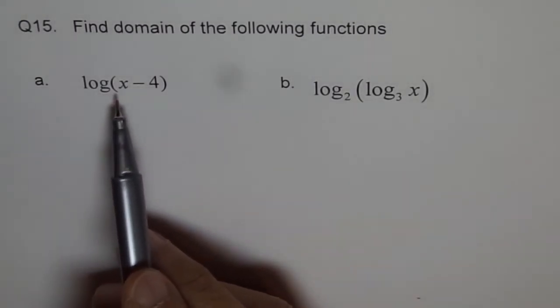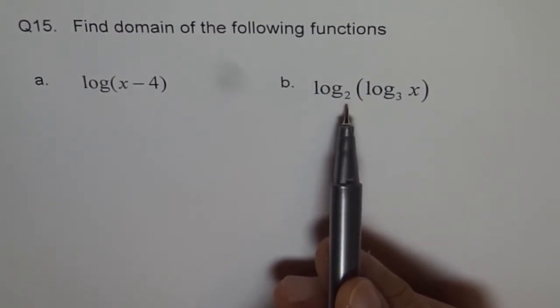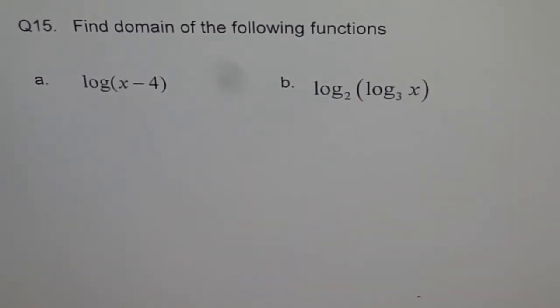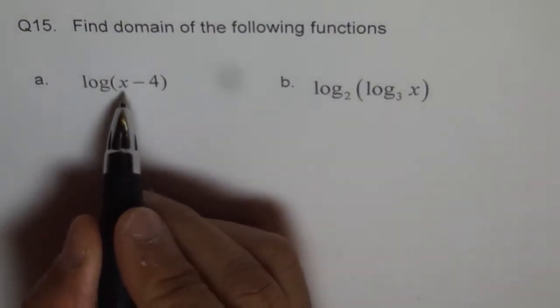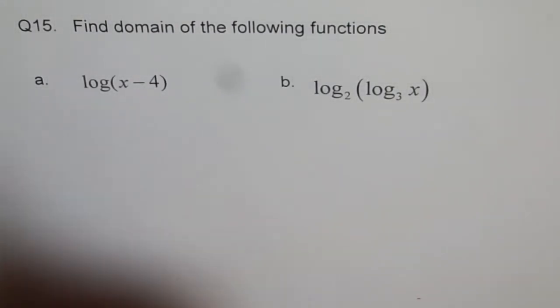A is log of x minus 4 and B is log to the base 2 of log to the base 3 of x. So, domain of log function is that x minus 4 should always be greater than 0. It should be positive.